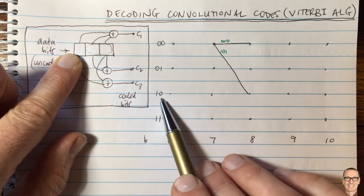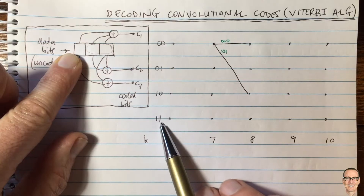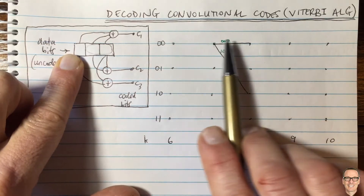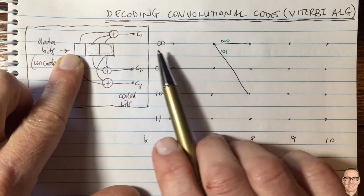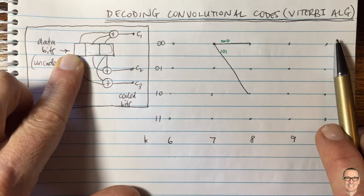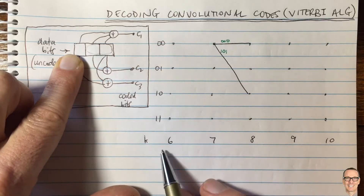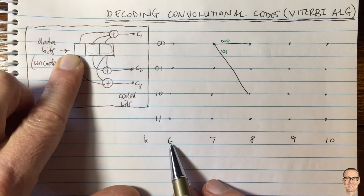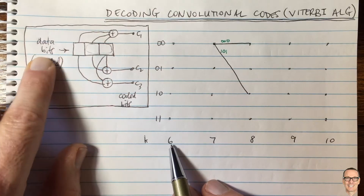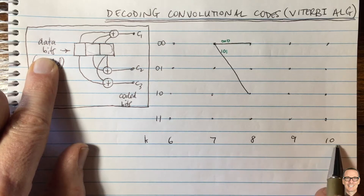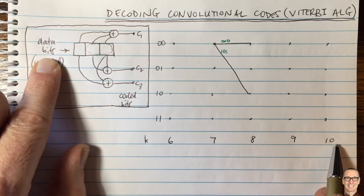The four possible states are 00, 01, 10, and 11. The trellis is filled in moving from left to right as time increases. I've done an example here where we start at data bits 6, 7, 8, 9, and 10.